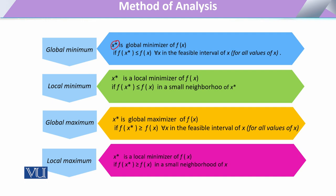If the function value at x is less than or equal to the function of all other x values but only in a small neighborhood of x, then that will be a local minimum. And if the next conditions are satisfied, it will be our global maximum.